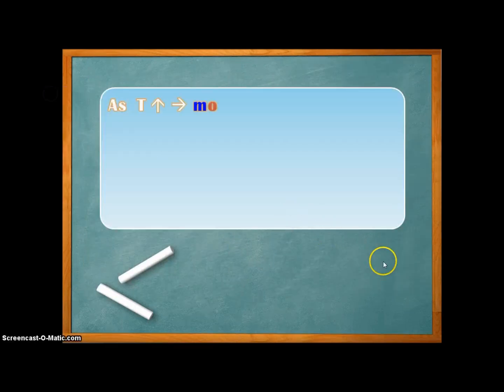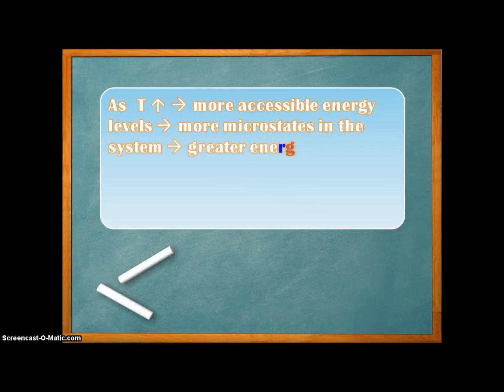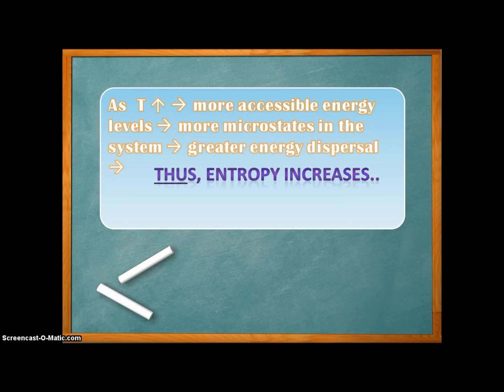In other words, as the temperature increases, there exists more number of microstates in the system. Energy spreads out and greater energy dispersal happens in the system and causes an increase in entropy of the system.